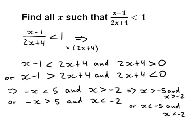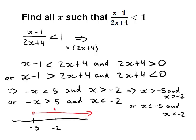Let's sketch this on the number line. With negative 5 and negative 2 marked, the first line gives us x greater than negative 5 and x greater than negative 2. Since there's an AND, we need both fulfilled simultaneously — the intersection — which is x greater than negative 2. That's the solution for the first line.